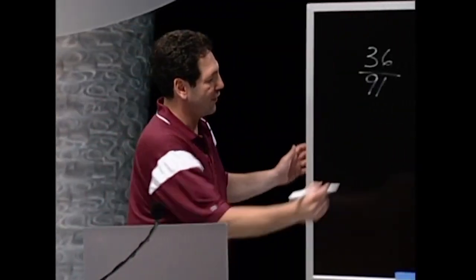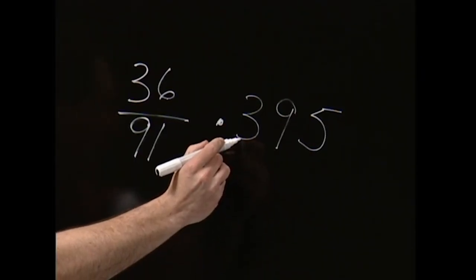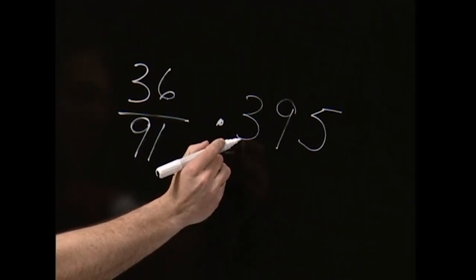Now, to get the next three, it's really easy. Once you have the 395, you look back at the first digit of the answer and say, how far is this number away from 9? How far is 3 away from 9? 6.